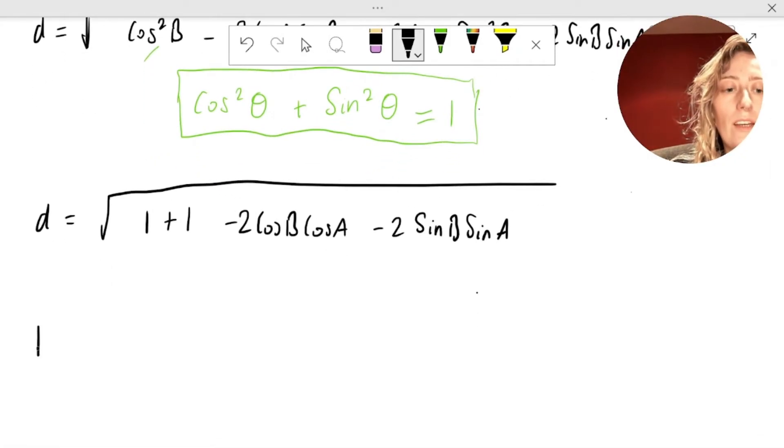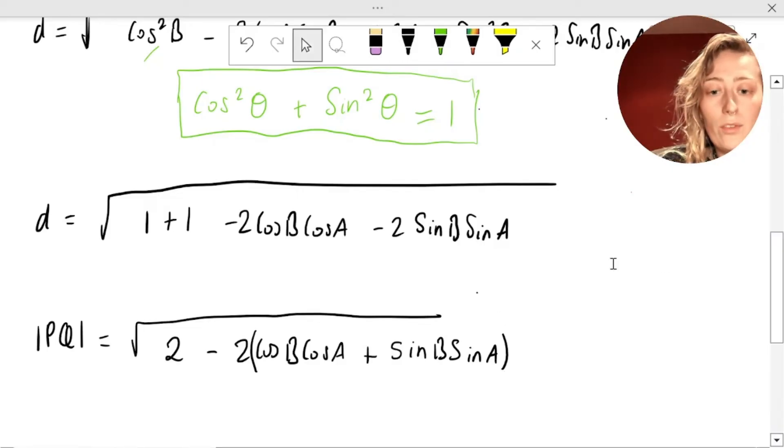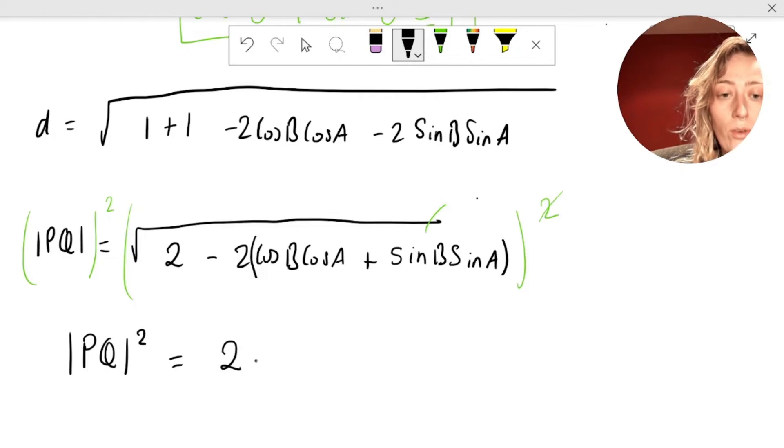1 plus 1 is 2. Again, this distance we're looking for right here is PQ. So we've got, this is 2 minus 2 cos, I can pull this minus 2 out in front of these. I've got a cos B cos A plus sine B sine A. Now, getting rid of that square root, we're going to square both sides. PQ all squared, this side all squared, that's going to cancel with our square root. And after method 1, we find that PQ squared, the distance PQ squared is equal to 2 minus 2 all by cos B cos A plus sine B sine A.